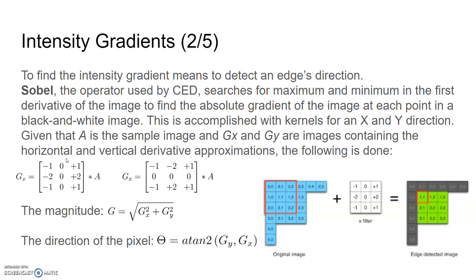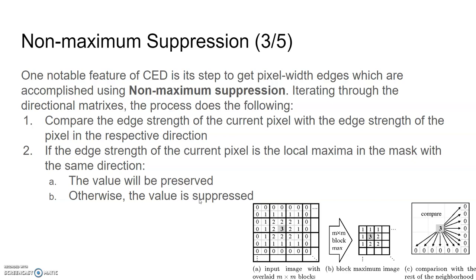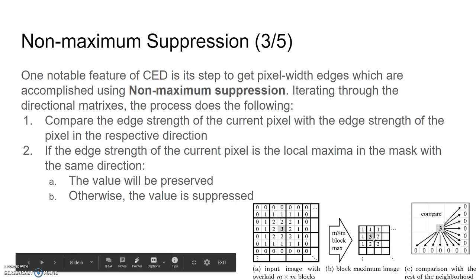Step three is non-maximum suppression. A notable feature of CED is this step to get pixel-thin edges, accomplished using non-maximum suppression. Iterating through the directional matrices, the process compares the edge strength of the current pixel with the edge strength of the pixel in the respective direction. If the edge strength of the current pixel is a local maximum within the mask of the same direction, the value will be preserved; otherwise, the value is suppressed to zero. Essentially, inside a mask, it takes the local maximum and preserves it while suppressing all other values.